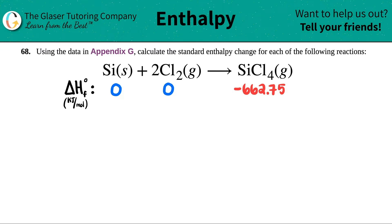Number 68. Using the data in Appendix G, calculate the standard enthalpy change for each of the following reactions.